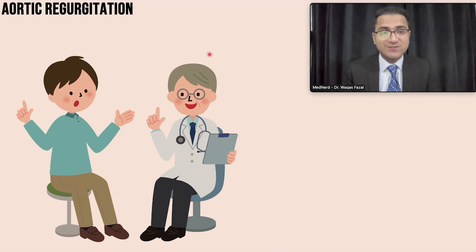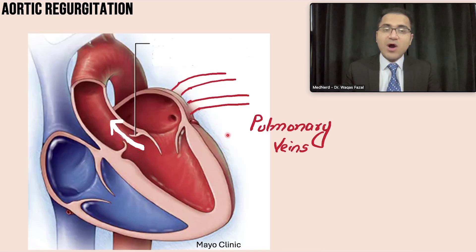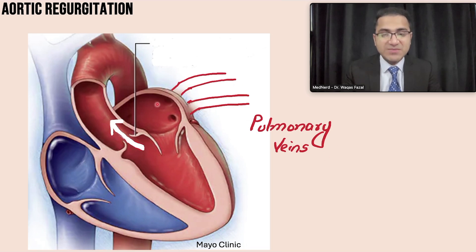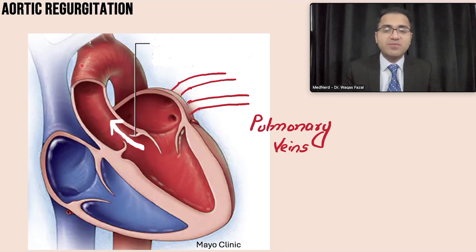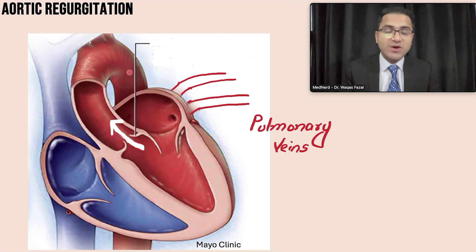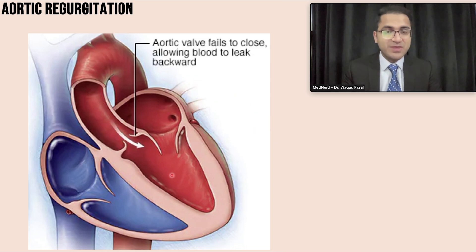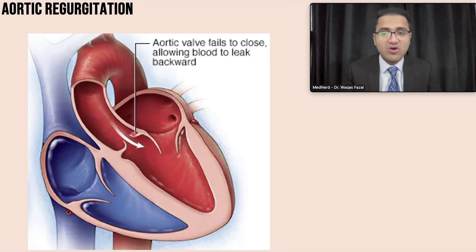What is aortic regurgitation? Pulmonary veins take oxygenated blood from the lungs to the left atrium, and from the left atrium into the left ventricle. From the left ventricle, this blood is pumped to the aorta through the aortic valve, and from the aorta it is spread to the whole body. In aortic regurgitation, this blood that is pumped out to the aorta gushes back into the left ventricle, which is abnormal.